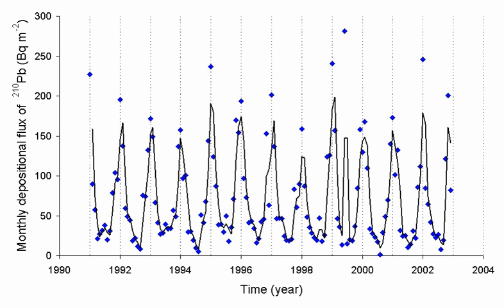Even today, the word radon may refer to either the element or its isotope 222Rn, with thorin remaining in use as a short name for 220Rn to stem this ambiguity. The danger of high exposure to radon in mines, where exposures can reach 1 million becquerels per cubic meter, has long been known. In 1530, Paracelsus described a wasting disease of miners, the Mala metallorum, and Georg Agricola recommended ventilation in mines to avoid this mountain sickness. In 1879, this condition was identified as lung cancer by Harding and Hess in their investigation of miners from Schneeberg, Germany.